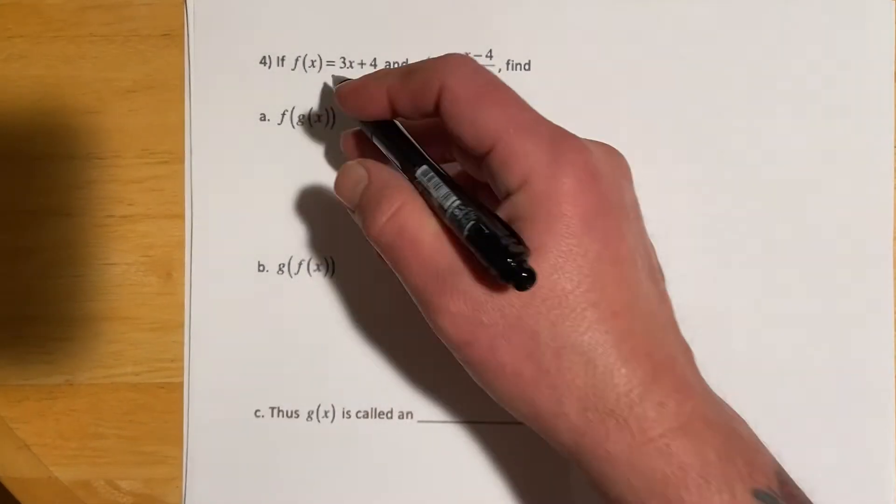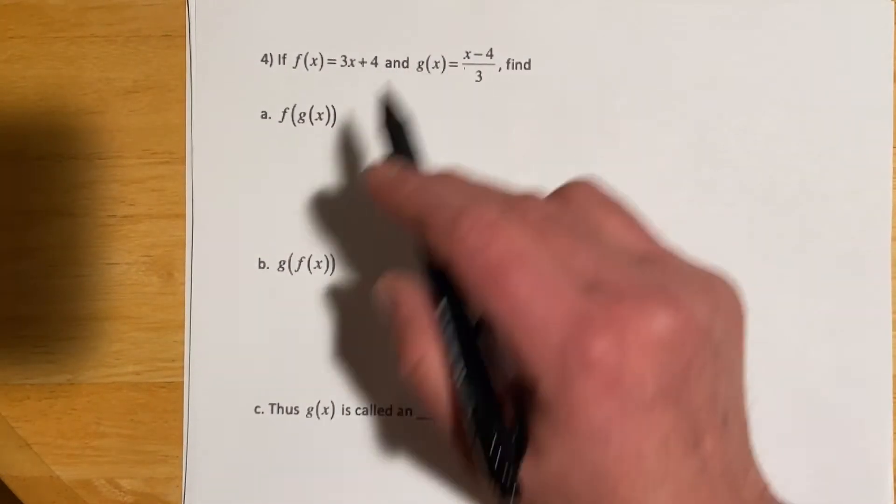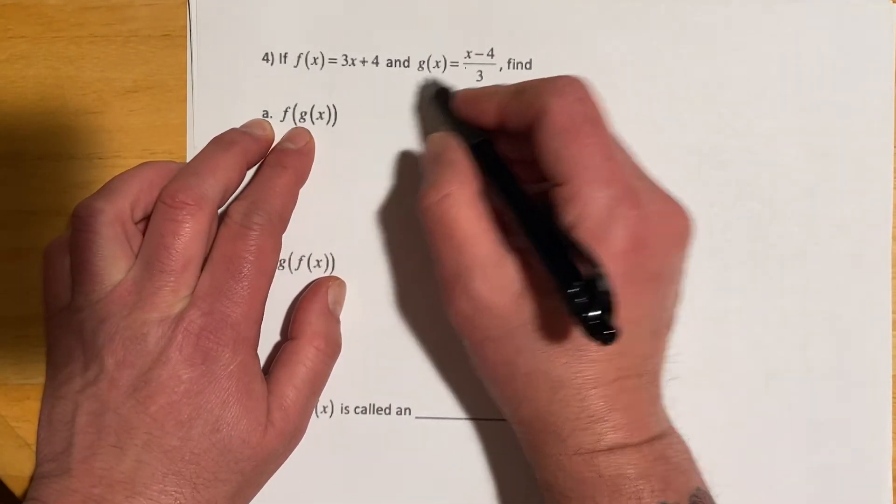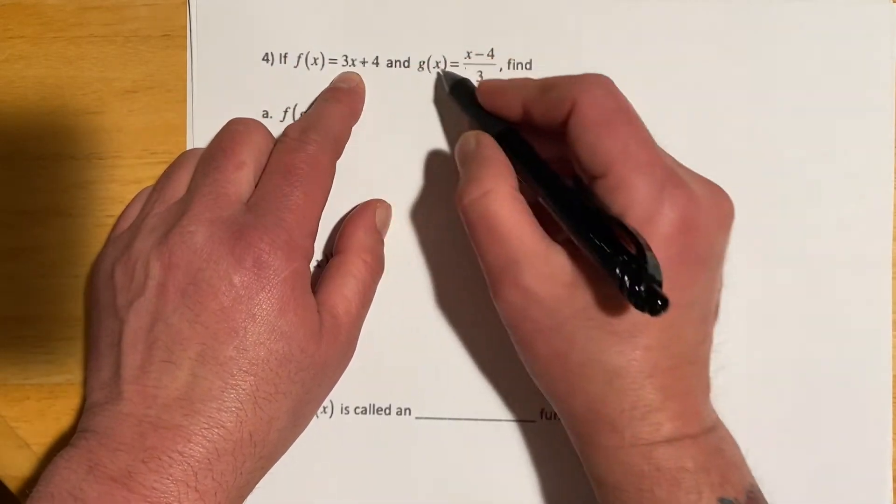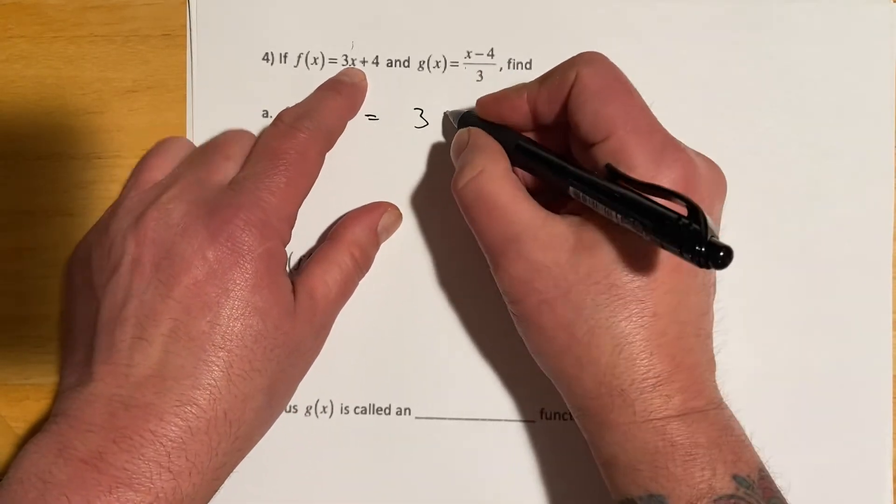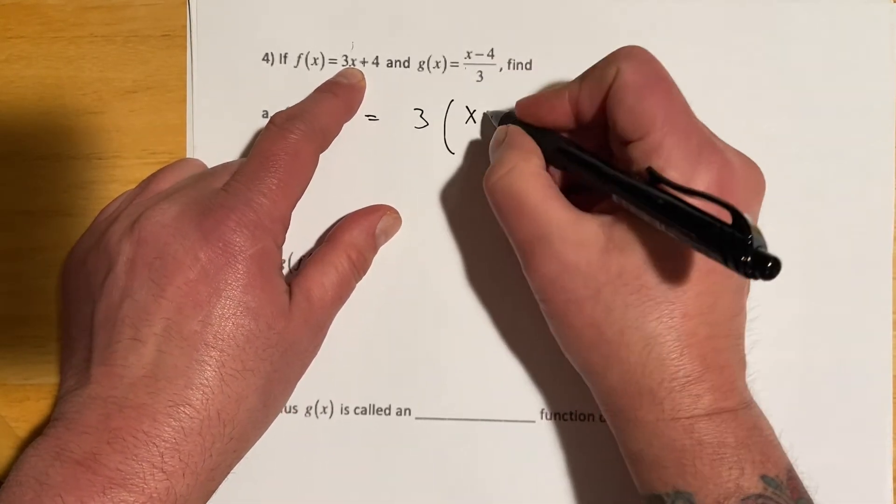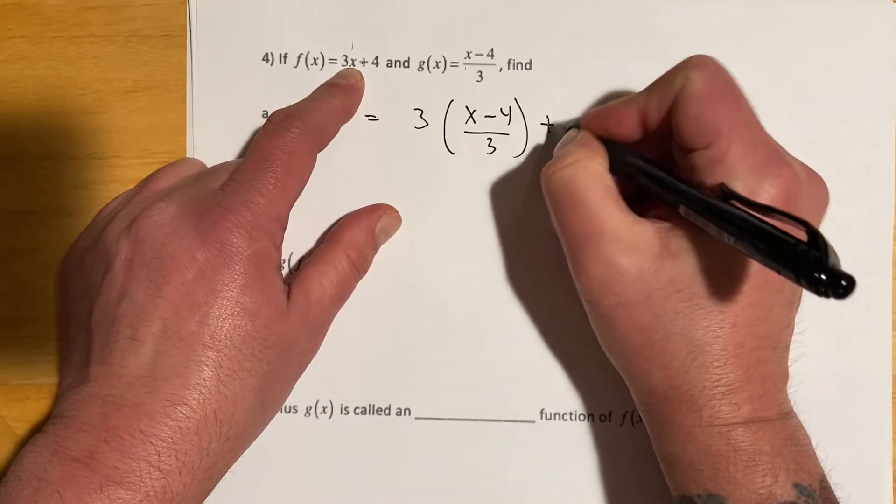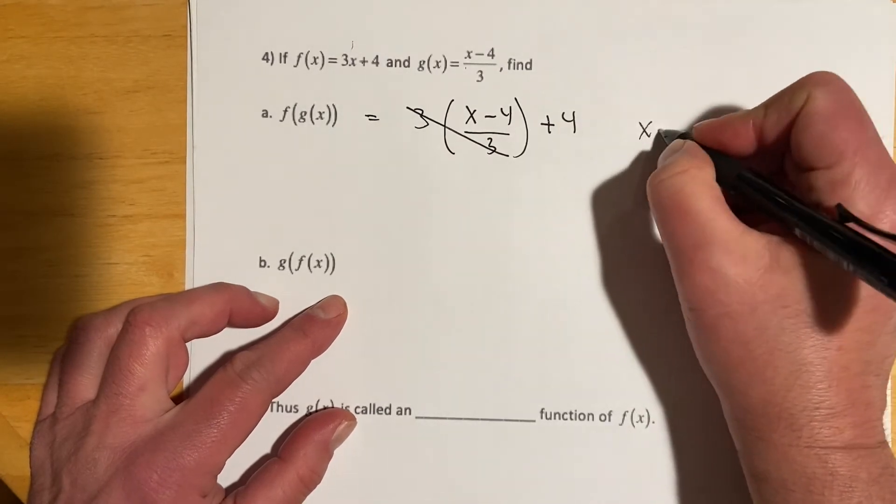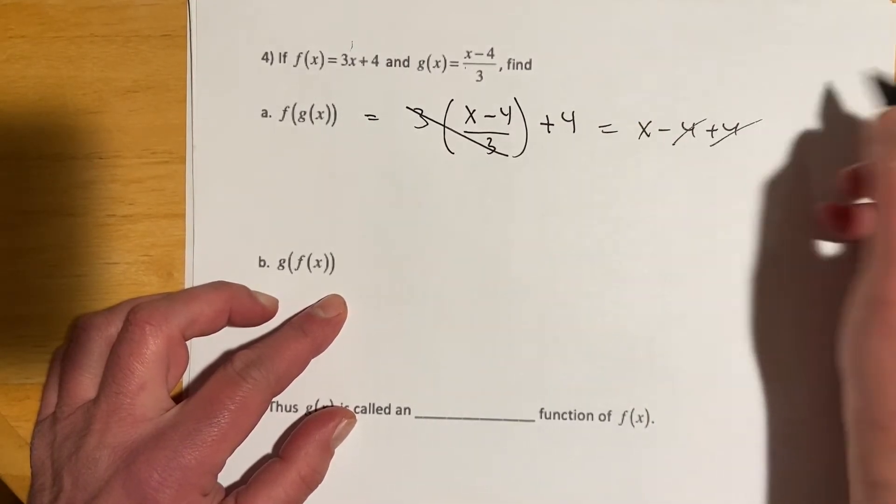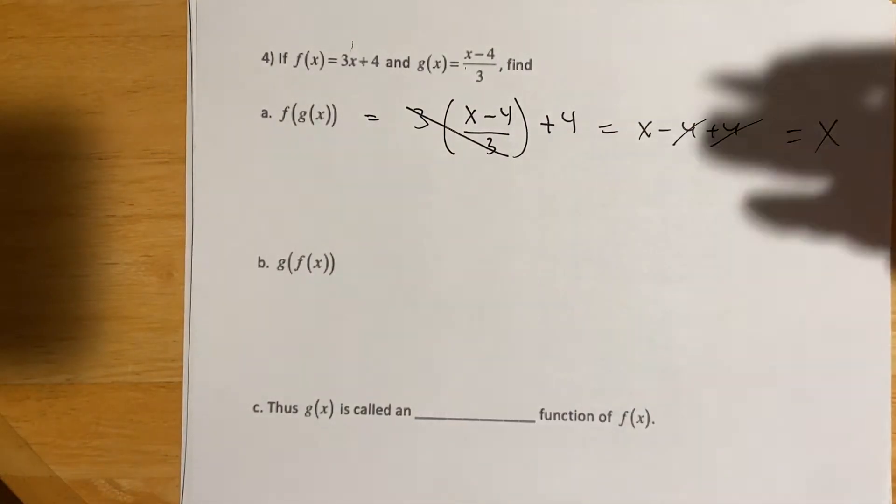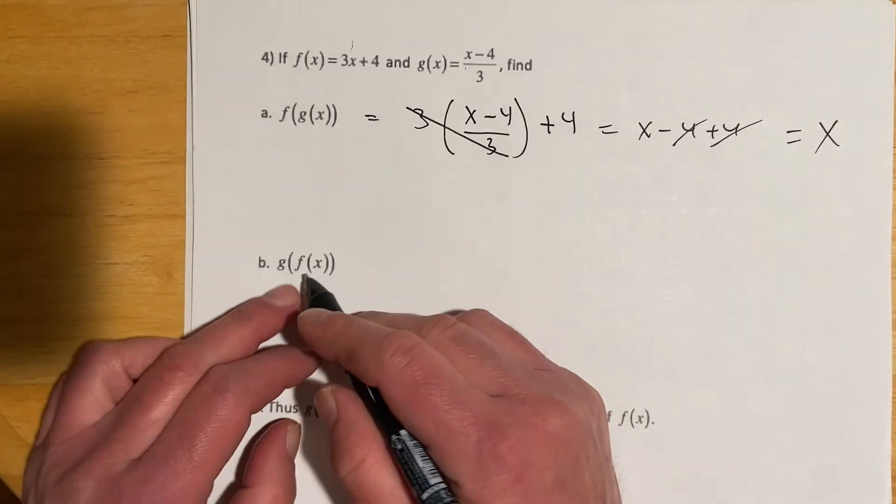This first one is asking us to basically verify that these two are inverse. So it's asking us to find the composite f of g. That means all the x's in f are going to get g in this first round. So this would be 3, instead of x it will be 3, g goes in there. Here I can cancel those 3's, so I'm left with x minus 4 plus 4, and then those cancel out, so there's our first x. That's what it should do if it's the inverse, is come right back to itself.